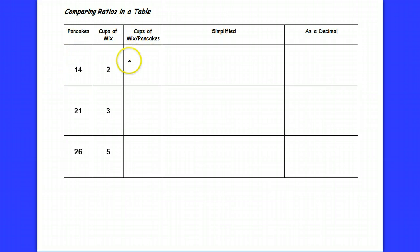So I'm going to look at the relationship between pancakes and cups of mix. For every 2 cups of mix I have, I can make 14 pancakes. That's the ratio between the mix and the number of pancakes I can actually make.